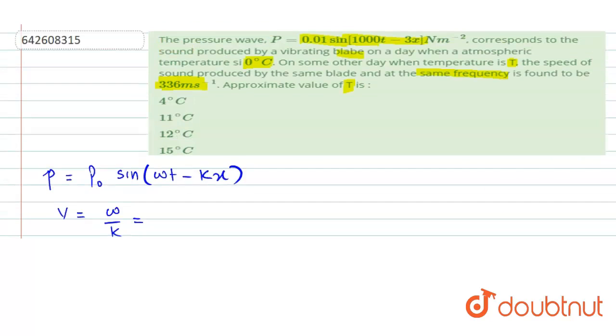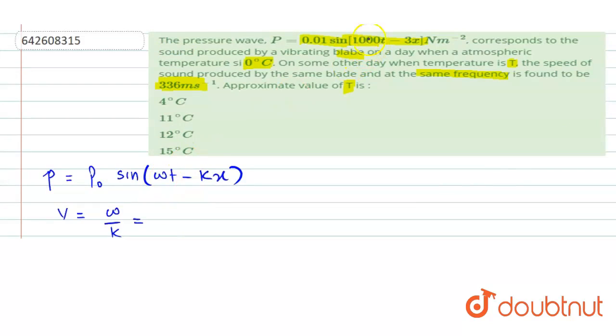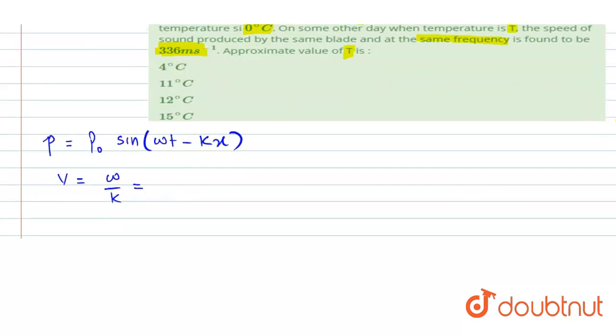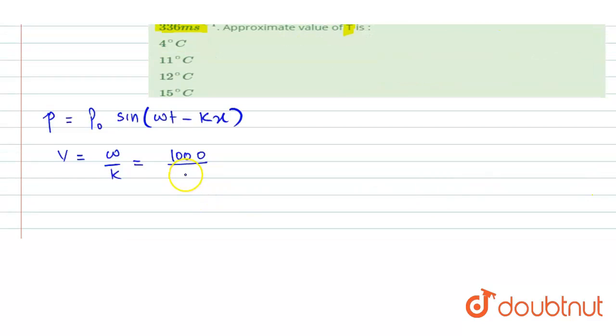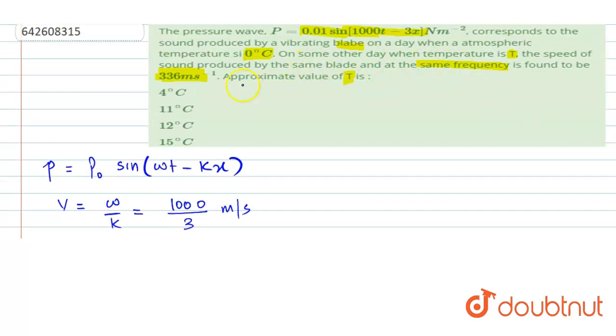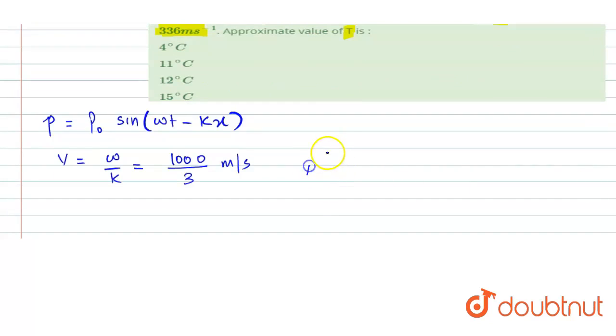We can see that the value of ω is given to us as 1000, and the angular wave number K is given as 3. So speed of sound is 1000 by 3 meter per second, and this speed of sound is at the temperature of 0 degree Celsius. In Kelvin, we can say this is at temperature of 273 Kelvin or 0 degree Celsius.